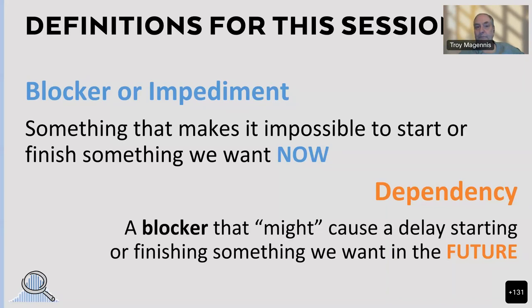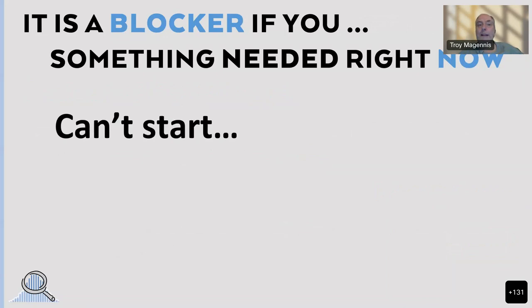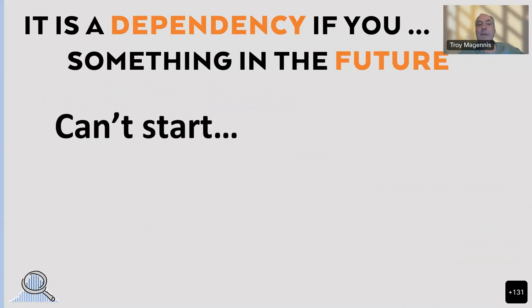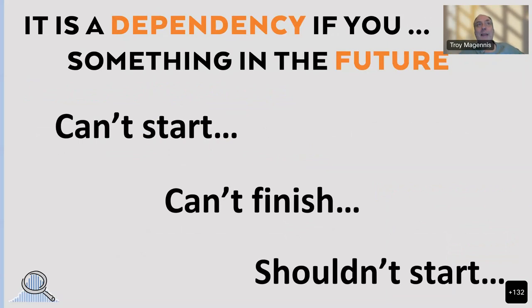Work was blocked historically because of dependencies you could have predicted and called a dependency in advance. Blockers and dependencies are the same thing — it's just when you're going to encounter it. If it's in the future, it's a dependency. If it's in the past, it's a blocker. This means that if we analyze data around blockers and impediments, we can understand the highest frequency and highest impact reasons work was delayed and go solve them. To manage dependencies better, you really need to get a handle on what impeded work being started or completed in the past.